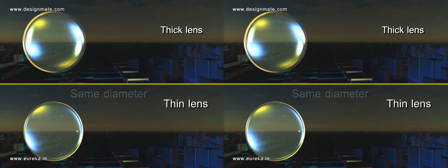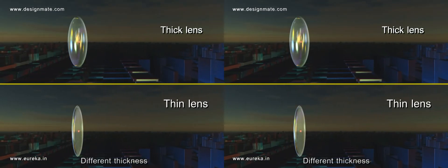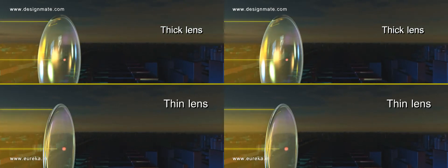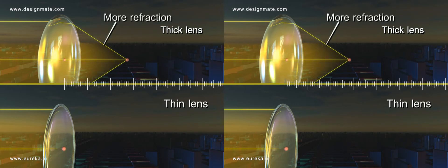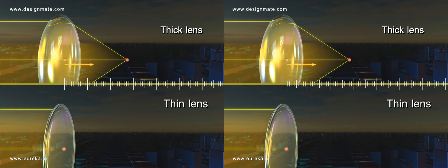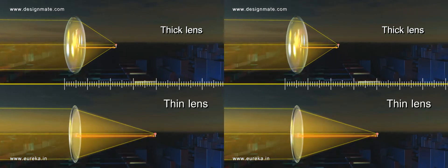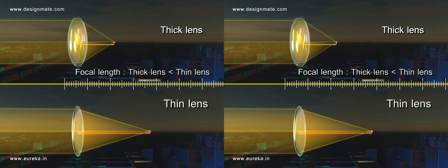Take two lenses of the same diameter but of different thickness and hence different curvature. When parallel light rays are incident on them, you can observe that light rays passing through the thick lens undergo more refraction and get converged at a shorter distance compared to the thin lens, which causes less refraction. So the thick lens has a shorter focal length than the thin lens.